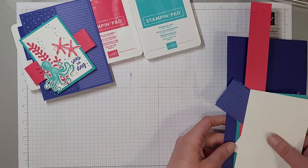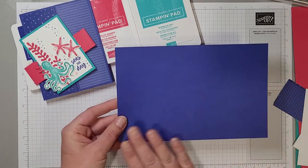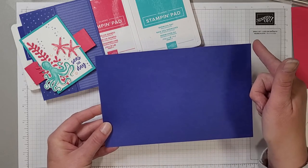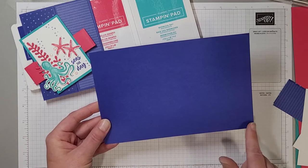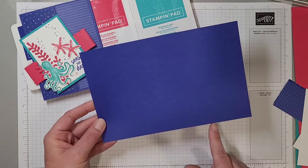To start with we have a Starry Sky card base and this measures eight and a half by five and a half and it's scored at two and an eighth in from either end. So two and an eighth in here, two and an eighth in here.